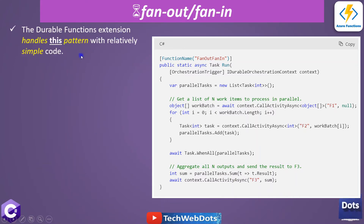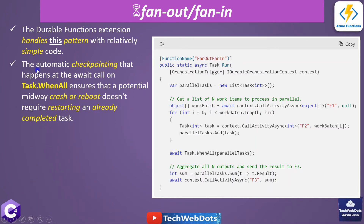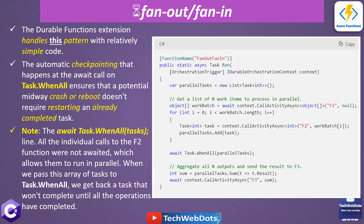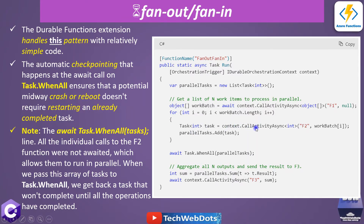The durable functions extension handles this pattern with relatively simple code. The automatic checkpoint that happens at the await call on Task.WhenAll ensures that a potential midway crash or reboot doesn't require restarting an already-completed task. An important note: the individual calls to f2 are not awaited, which allows them to run in parallel or concurrently, unlike the chaining pattern where await was used.